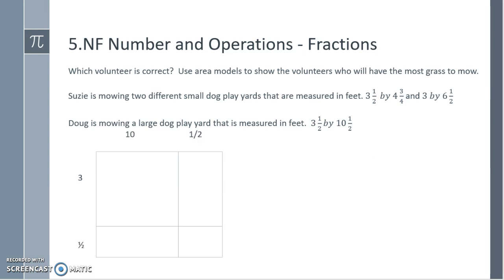Now let's move on to Doug. Doug has a larger dog play area that is 3 1⁄2 by 10 1⁄2. We'll decompose them into whole number pieces and fractional pieces. 3 times 10 is 30, 3 copies of 1⁄2 is 1 1⁄2, 10 copies of 1⁄2 or 1⁄2 of 10 is 5, and 1⁄2 times 1⁄2 is 1⁄4. Adding our pieces together, 30 plus 1 1⁄2 plus 5 plus 1⁄4 is 36 3⁄4 square feet.